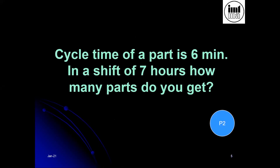If the cycle time of a part is six minutes and the shift is seven hours, how many parts do you get? Arithmetic says 70 parts. But if you are a practicing production person, an answer of 50 to 70 is more likely than 70. Why do you think 50 to 70 is a more likely answer than 70?